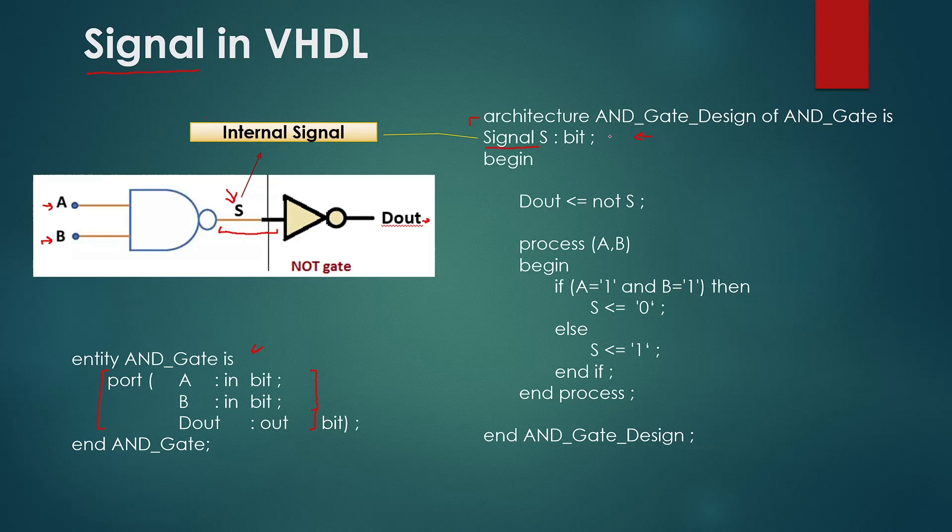But the signals which we define inside the architecture are not actually the interface pins but we wanted to use them internally and these signals can only work inside that architecture. In VHDL we do that by declaring the signals in the architecture between the architecture and begin statement as I am mentioning in this example.